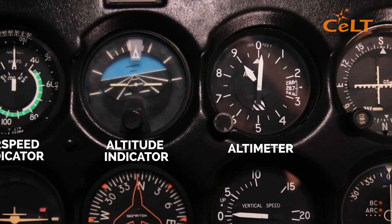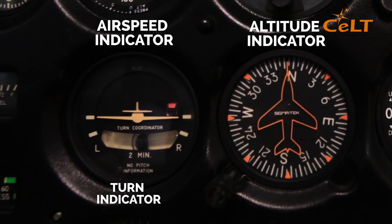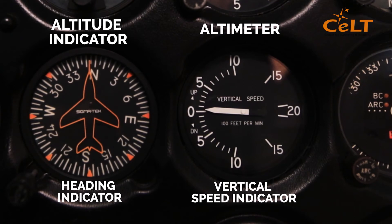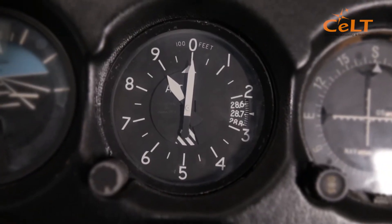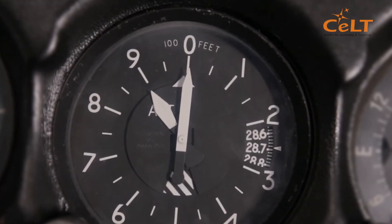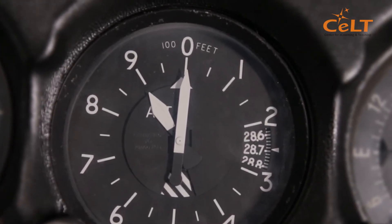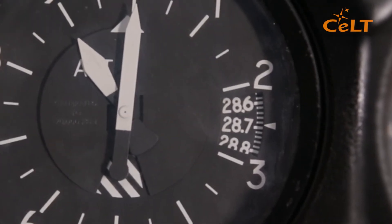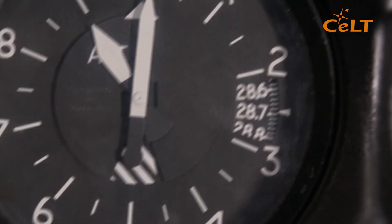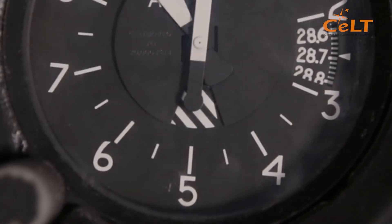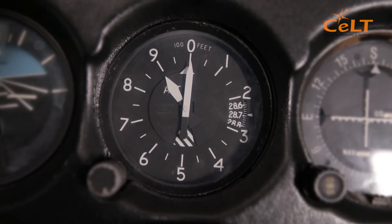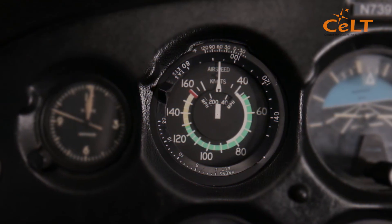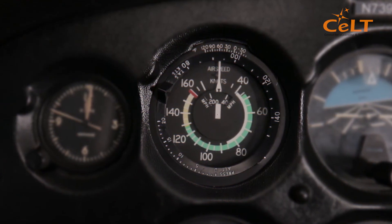The six basic instruments are: airspeed indicator, attitude indicator, altimeter, turn indicator, turning coordinator, and vertical speed indicator. The altimeter gives the aircraft's height, usually in feet or meters above a reference level, usually sea level, by measuring the local air pressure. It is adjustable for local barometric pressure reference to sea level, which must be set correctly to obtain accurate altitude readings.